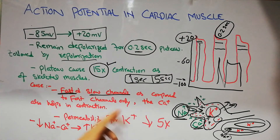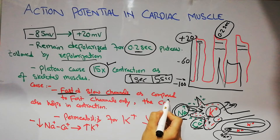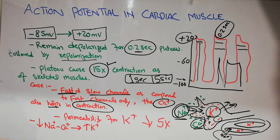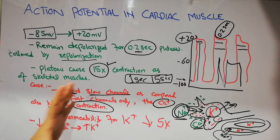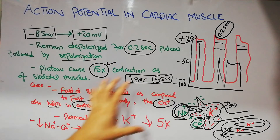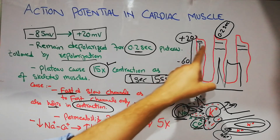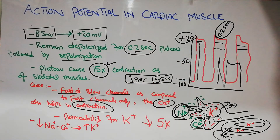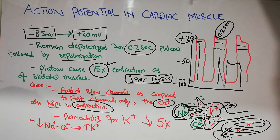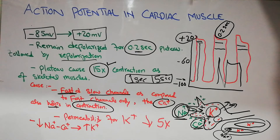Not only does calcium cause the plateau, it also helps in the contraction of the cardiac tissue. In skeletal muscles, contraction is caused by calcium released from the sarcoplasmic reticulum. But in cardiac tissue, this calcium from slow channels not only causes the plateau but also helps in the contraction process.